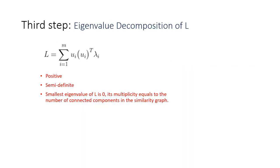The Laplacian L is symmetric and positive semi-definite. We can find a set of m orthonormal eigenvectors, which correspond to m non-negative and increasing eigenvalues. The smallest eigenvalue of L is 0, and its multiplicity equals to the number of connected components in the similarity graph.